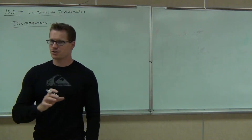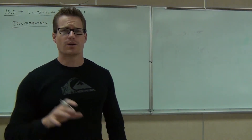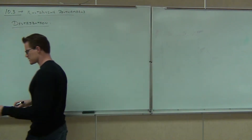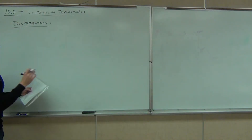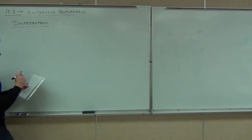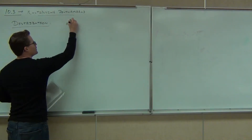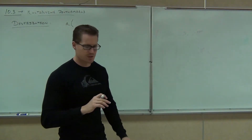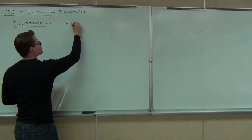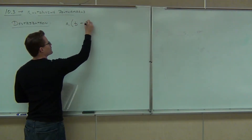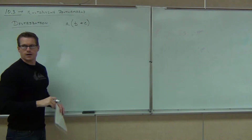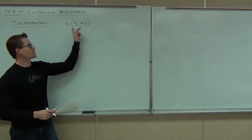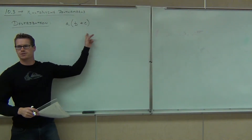We'll take a look at the distribution we've already had, and I'll extend that concept to something new. So here's the idea of distribution: if you have some quantity outside of a parenthesis and you have a polynomial inside that parenthesis — notice we have a polynomial here — how many terms are here? Two.